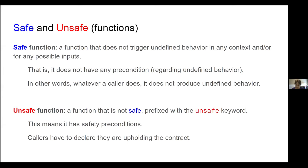A quick review of what a safe and unsafe function is. The 'unsafe' keyword in Rust is sometimes a bit confusing for newcomers. Basically, a safe function means there is no undefined behavior when you call that function — there is no way you can trigger undefined behavior. That also means there are no safety preconditions to call that function. An unsafe function means the opposite: it has safety preconditions, and we prefix it with the 'unsafe' keyword.